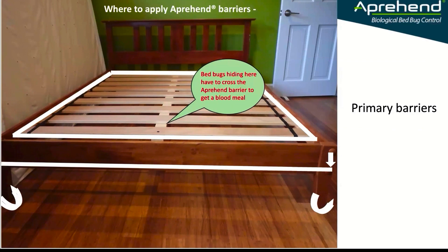We're going to put a barrier around the outside perimeter of the bed frame and also around the inside perimeter. That means that even if there's a bed bug hidden in a screw hole in the middle of the bed that we didn't see when we vacuumed, when that bed bug needs to take a blood meal it has to cross one of those barriers — the inner perimeter barrier — before it can get to the human.